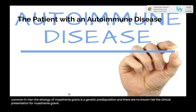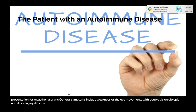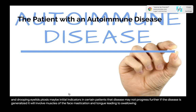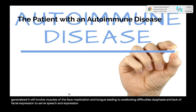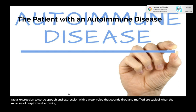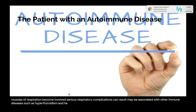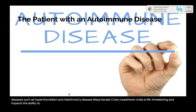Clinical presentation of myasthenia gravis: general symptoms include weakness of eye movements with double vision (diplopia) and drooping eyelids (ptosis), which may be initial indicators. If the disease is generalized, it involves muscles of the face, mastication, and tongue, leading to swallowing difficulties (dysphagia), lack of facial expression, disturbed speech with a weak, tired, and muffled voice. When the muscles of respiration become involved, serious respiratory complications can result. Myasthenic crisis is life-threatening, impacting the ability to swallow and respiratory muscles — this is an emergency requiring 911 and basic life support.